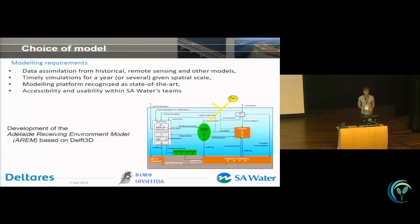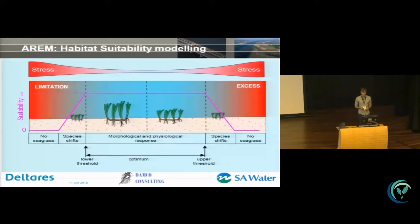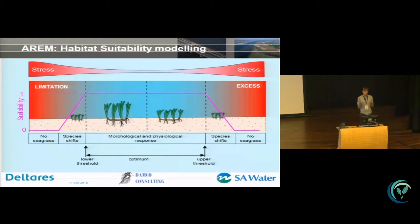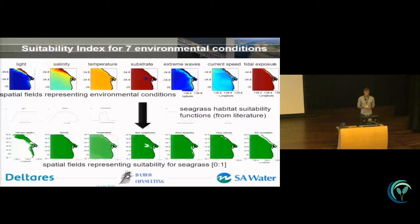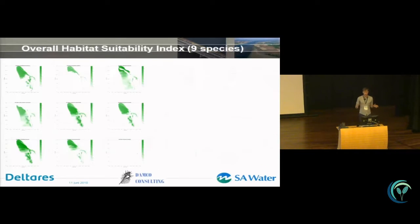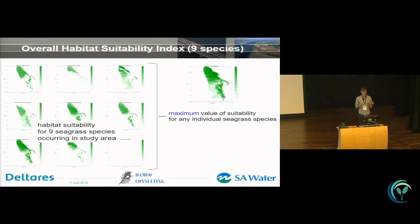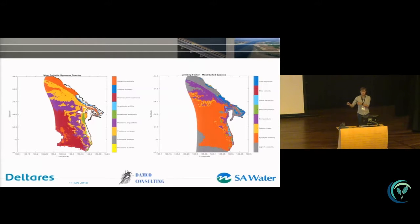So we started working on the development of the Adelaide Receiving Environment Model, called AREM. It boils down to habitat suitability modeling — there's a lot of engineering with partial differential equations before that, but I'll focus on the habitat suitability modeling here. We based habitat suitability on seven conditions: substrate, wave conditions, salinity, temperature, inundation time, flow velocity, and of course light. We modeled all nine species of seagrass in the study area, giving us a good idea of which factor is limiting seagrass occurrence in each location.